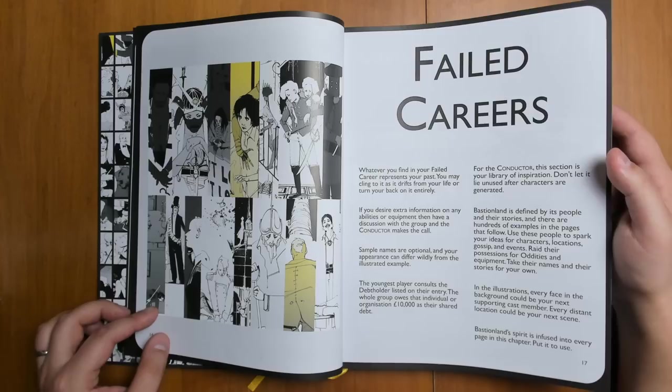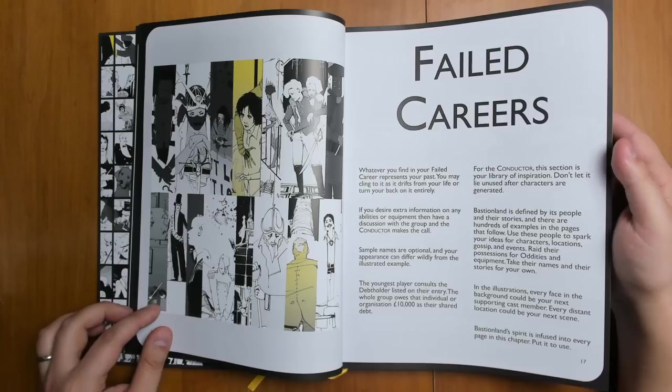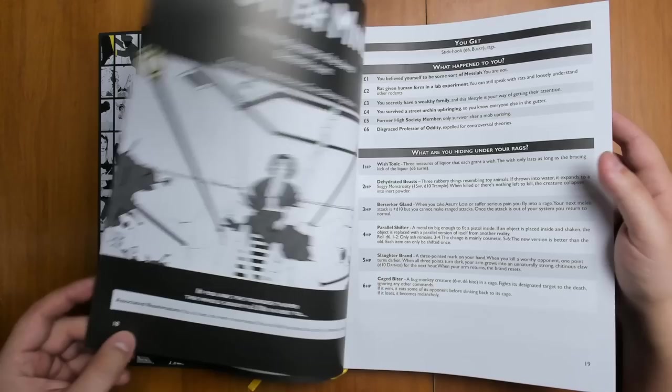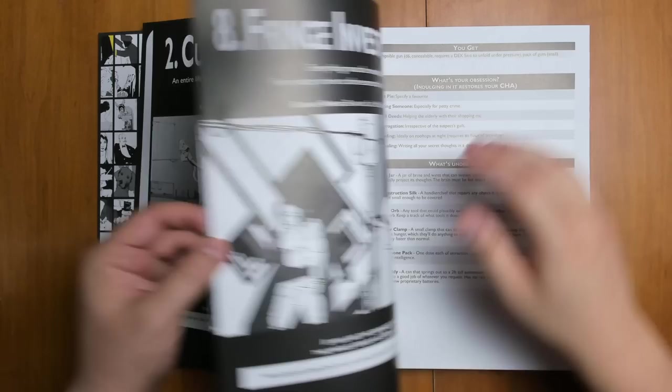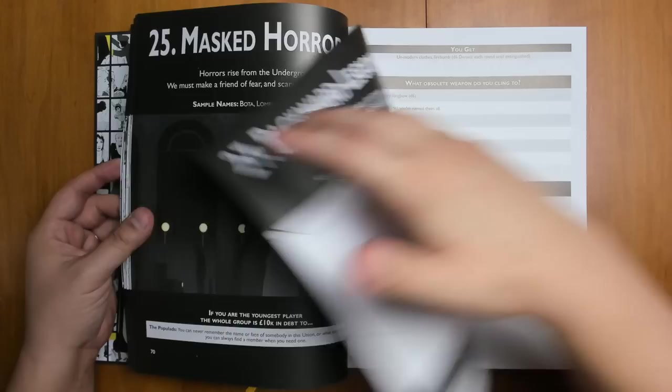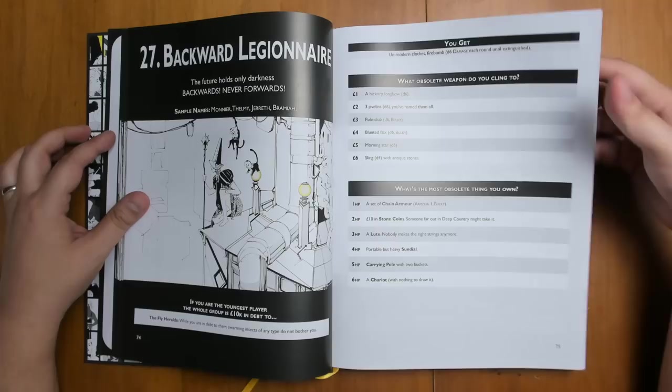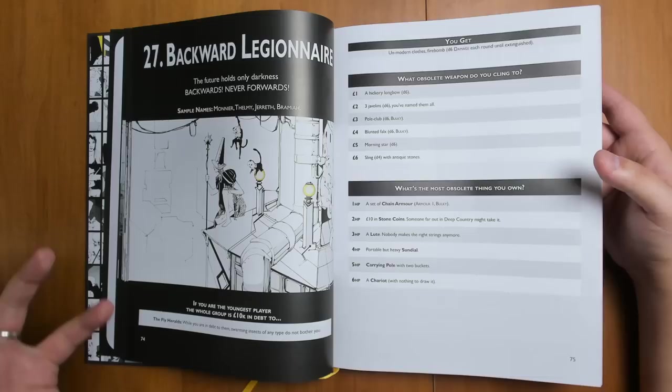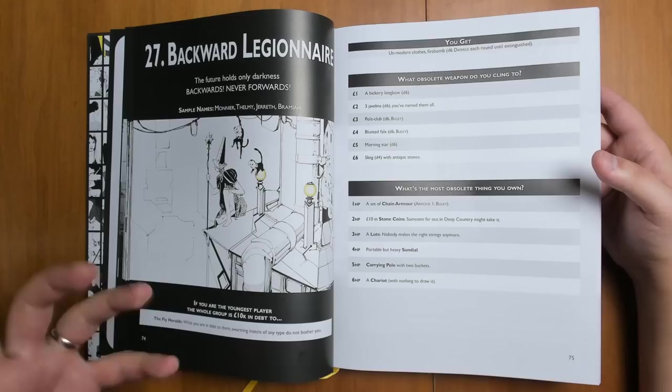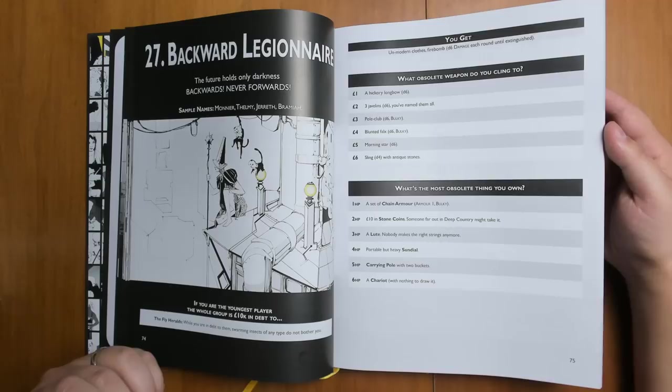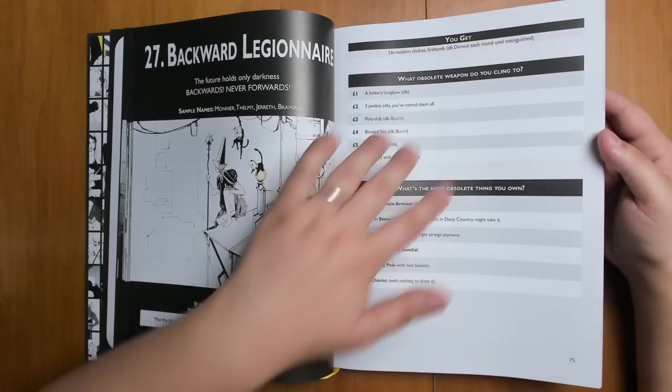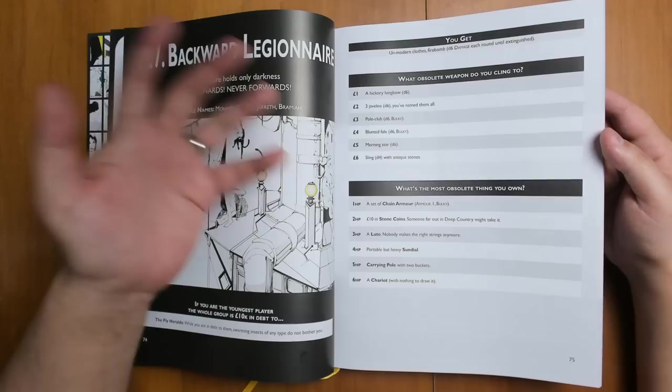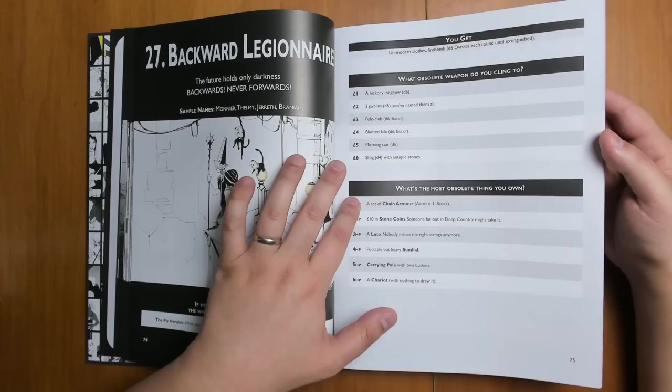Now we get into failed careers, which is the majority of the book. There's 100 of these, and each of them takes up a two-page spread. So that's 200 pages of failed careers. Starting off with the gutter minder, and then the curiosity compiler, the fringe investigator, the lost expeditioner, and so on. The format is always the same, no matter where you are. You have your title here with a number. You have a nice big picture here, all done by the artist Alex Sorensen. You have the note here, if you're the youngest player, the whole group is 10,000 pounds in debt to, and it tells you who you're in debt to. Usually some sort of weird faction or NPC that is coming for you if you don't pay off your debts. You always start off with some equipment. You have what obsolete weapons you cling to. You roll a d6 here to figure out how many pounds you start with, and then you also have a second d6 table to figure out your hit points and some other items.